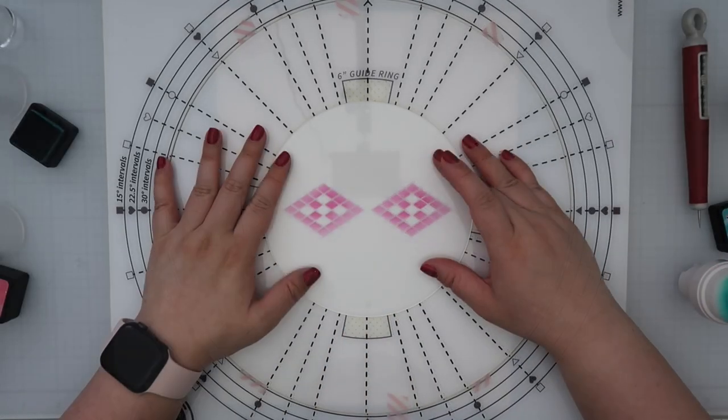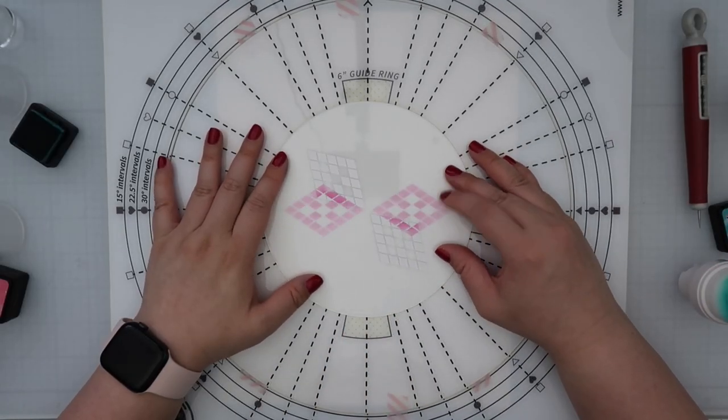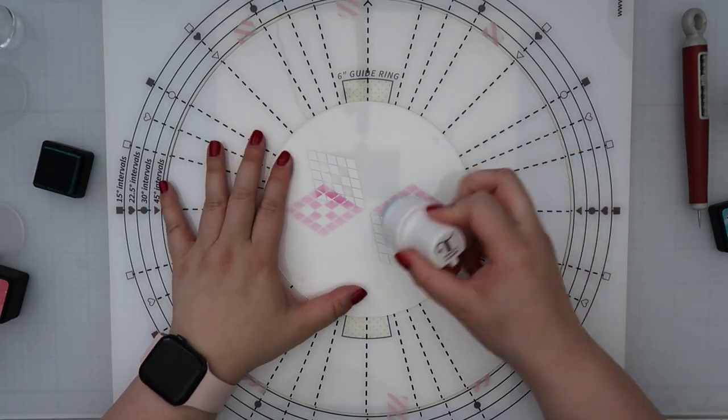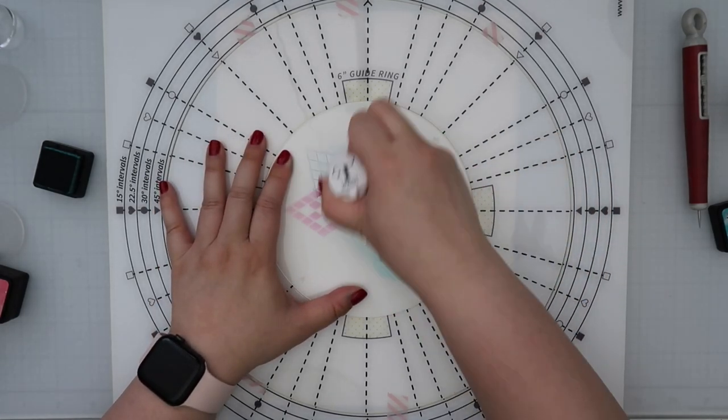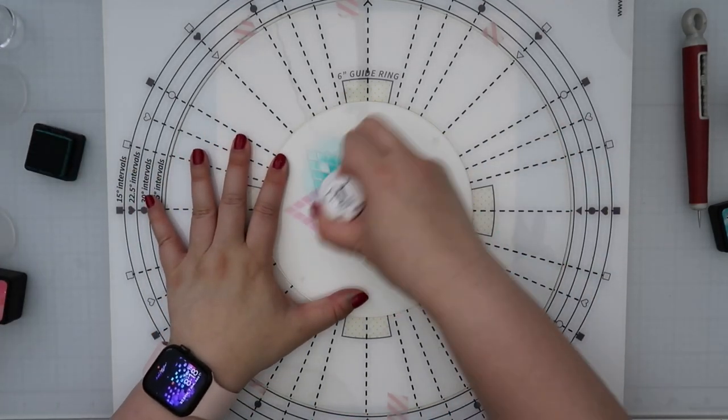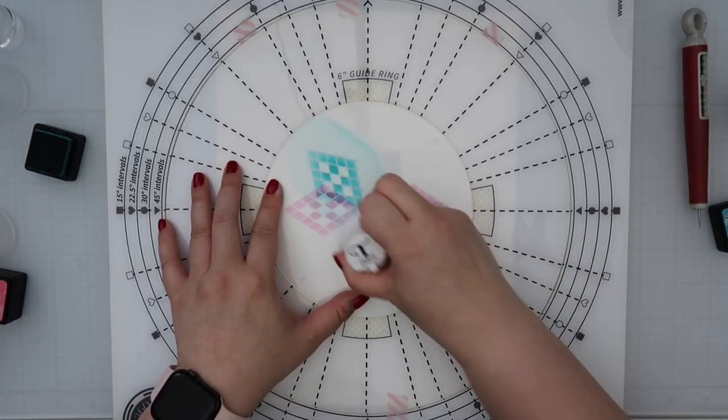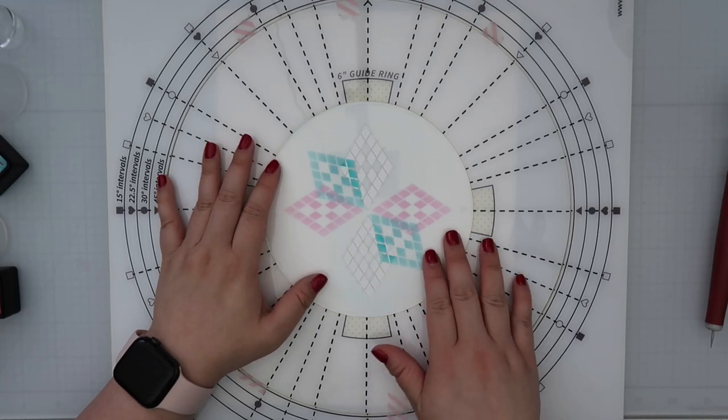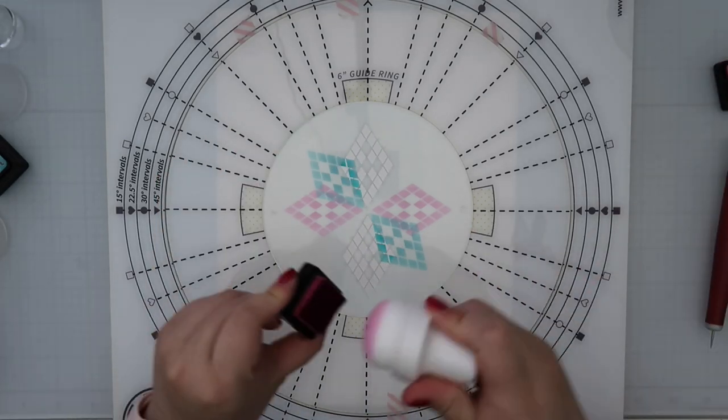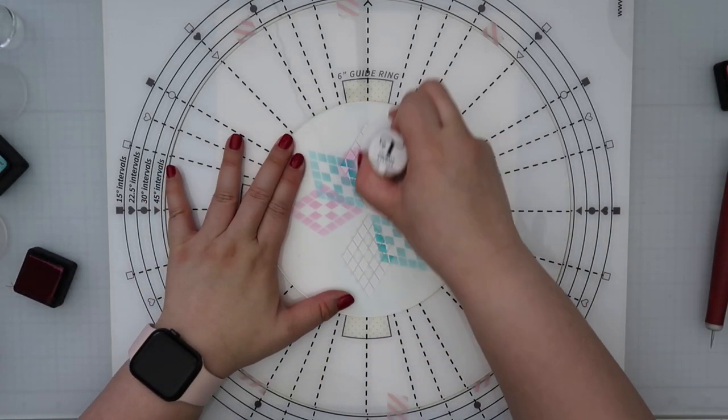So I'm going to go in with this stencil, the Diamond Geo stencil. I'll ink it up and then I will rotate it, I believe it is 30 degrees, 30 or 45, I can't really remember, but you can follow the pattern on the top and it shows you where to rotate it. Honestly you can rotate it wherever you would like because you'll be able to create a repeating pattern anyway.